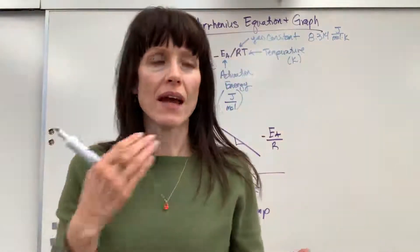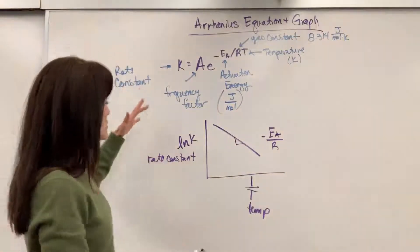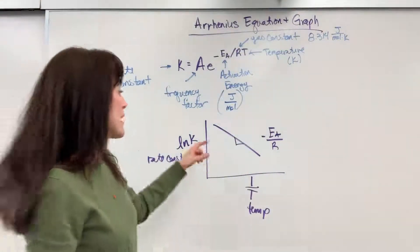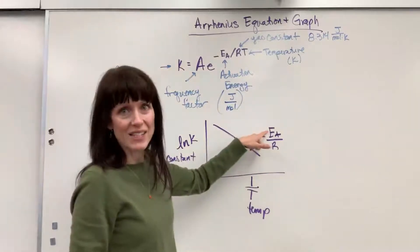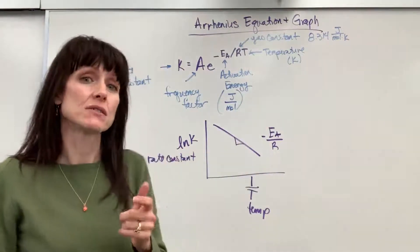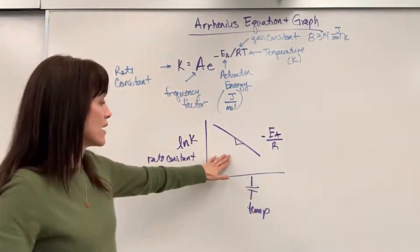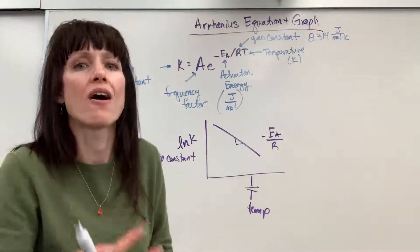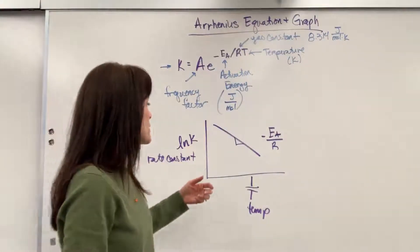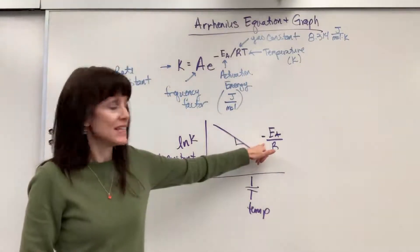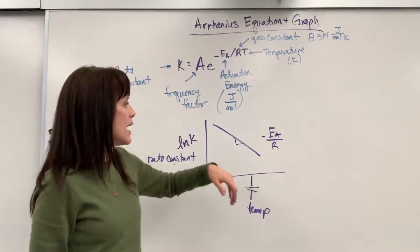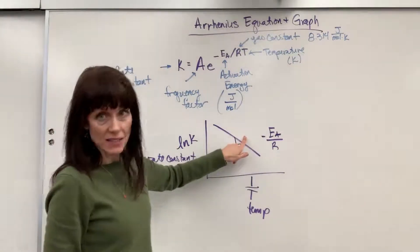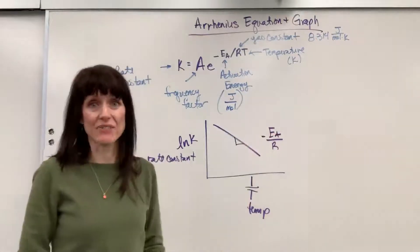I've seen on AP FRQs that students are given this graph and expected to calculate the Ea, the activation energy. In fact, the last question that I saw on an AP FRQ, they didn't even have students calculate it. Students just had to write in words how they would calculate it, and they had to specify that the slope is negative Ea over R, and that they'd simply do rise over run, multiply both sides by the gas constant R, and that would give them the activation energy.